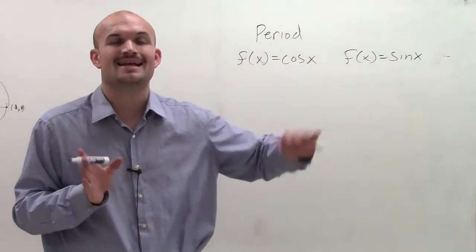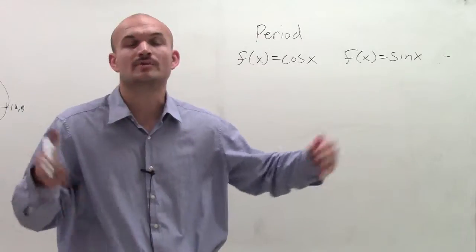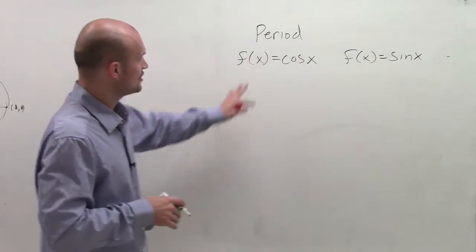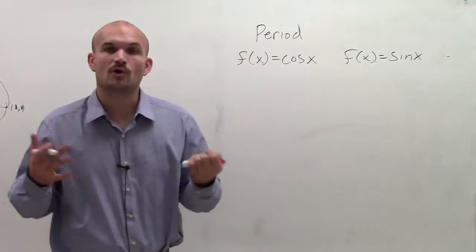What that means is the distance that it took on our graph for our graph to complete one cycle. It always ended when it went to 2 pi, it ended back right where it started. So we call that one period. So the period for cosine and sine of x were both 2 pi.